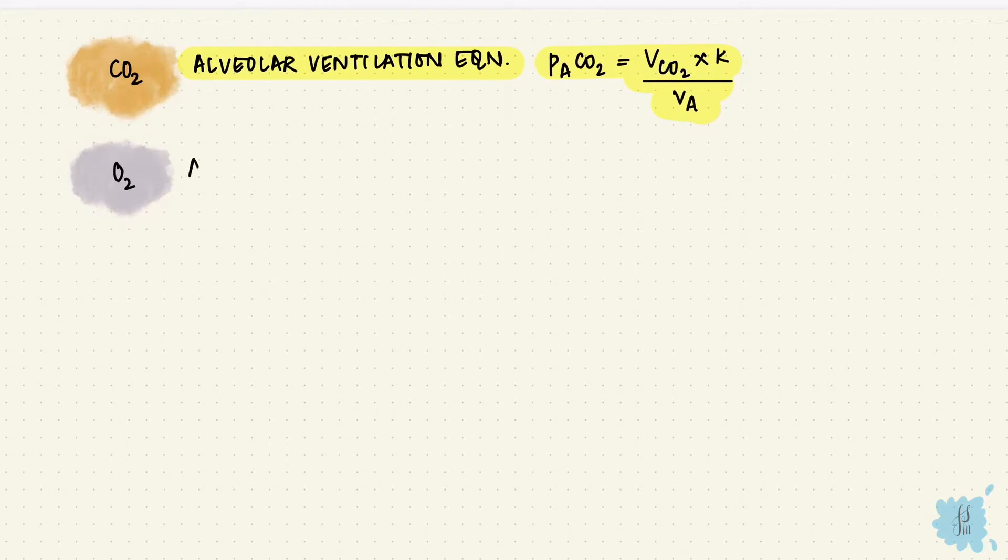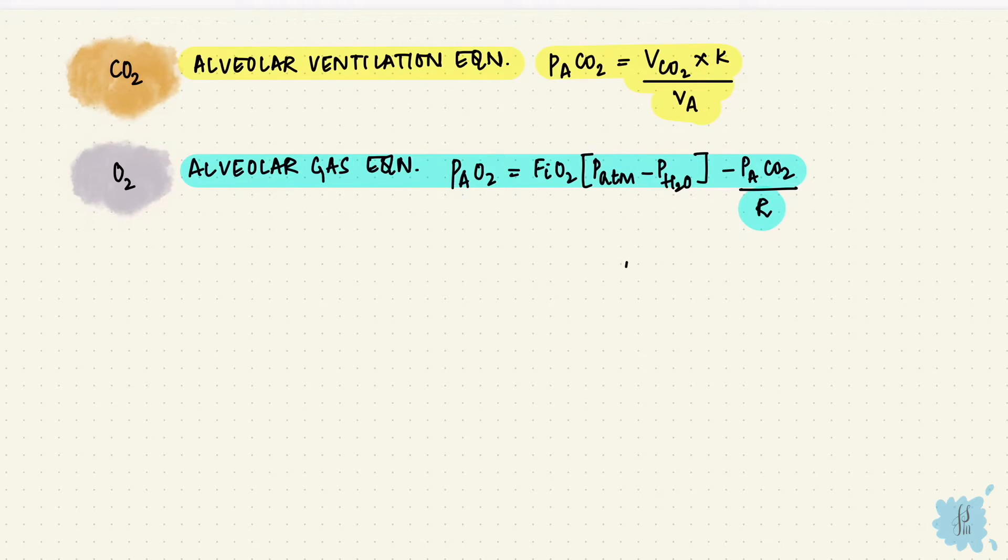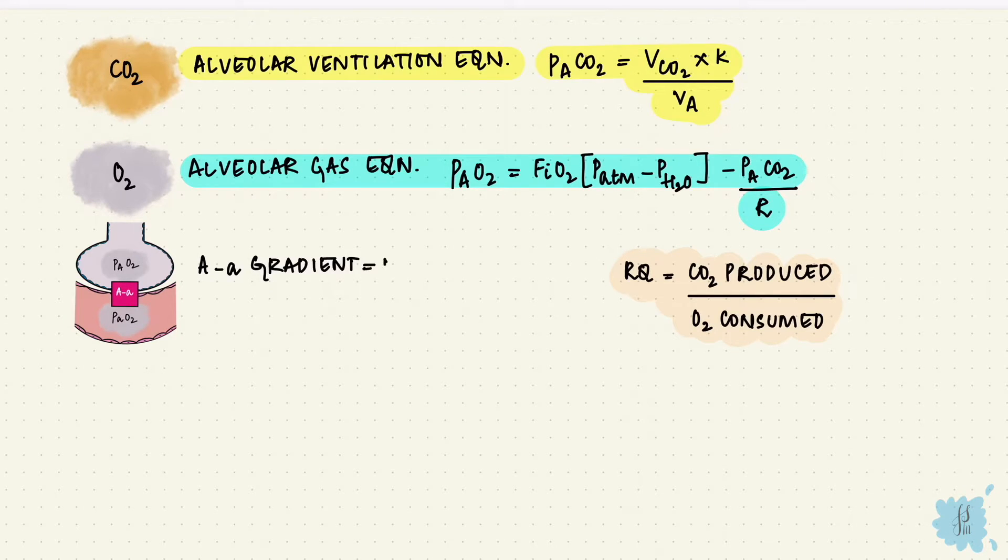Oxygen can be determined from the carbon dioxide using the alveolar gas equation. Alveolar oxygen is equal to the fraction of oxygen in inspired air into the difference between atmospheric pressure and water vapor pressure minus the alveolar carbon dioxide over the respiratory quotient. This respiratory quotient is the ratio of carbon dioxide produced to oxygen consumed, and it's normally 0.8. The difference between alveolar and arterial oxygen is called the alveolar-arterial gradient, that's the A-a gradient.